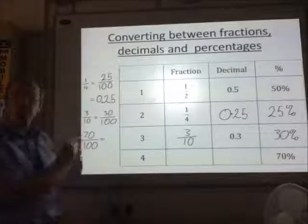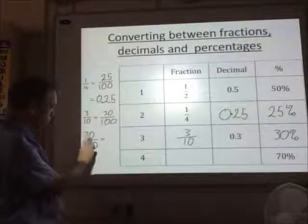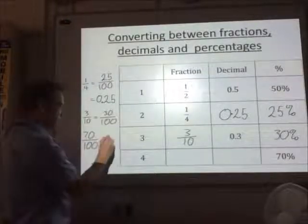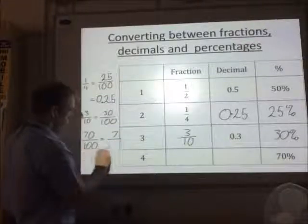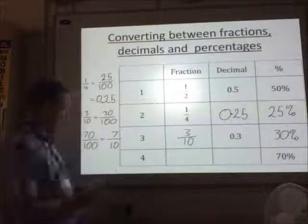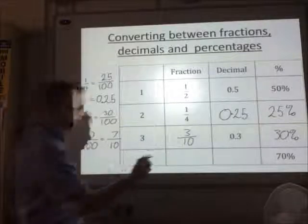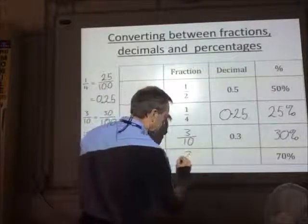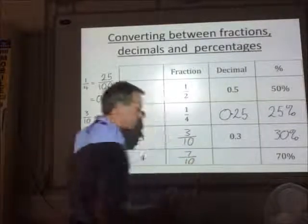So I can see that I've got a factor of 10 common to the top and the bottom. So if I divide the top by 10, I get 7. If I divide the bottom by 10, I get 10. So my fraction here is 7 tenths.